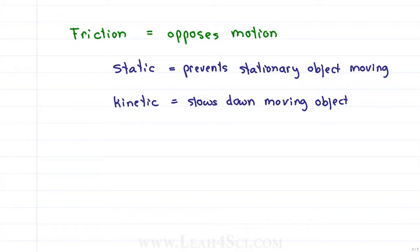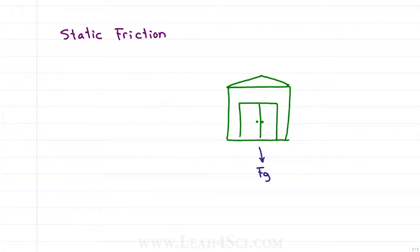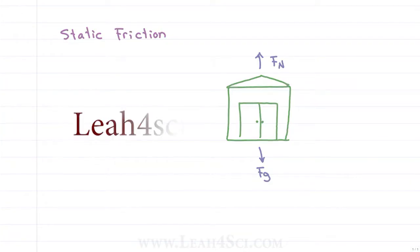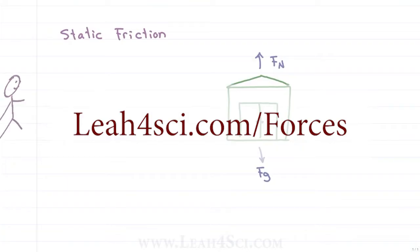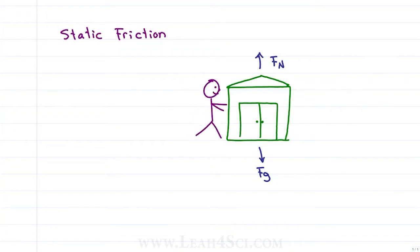Say you have a shed in your yard just sitting there minding its own business. Don't forget that the shed is on earth and therefore is impacted by a downward force of gravity, opposed by an upward normal force, as discussed in previous videos. There are no forces in the x direction until you come along and push the shed with your finger.